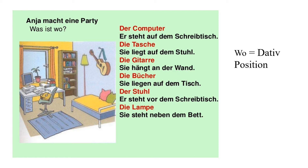How do you understand that we are using Dativ here? With the question word 'wo'. Wo means 'where' — it always shows you the position. So Dativ shows you the position of things, and then we use the Dativ articles after the prepositions.